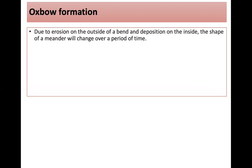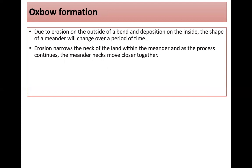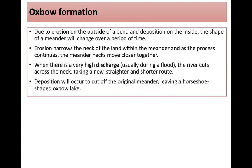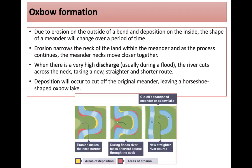Meanders sometimes form oxbow lakes. Due to erosion on the outside of a bend and deposition on the inside, the shape of a meander changes over time. Erosion narrows the neck of the land within the meander, and as the process continues, the meander neck moves closer together. During very high discharge, usually during a flood, the river cuts across the neck, taking a new straighter and shorter route. Deposition occurs to cut off the original meander, leaving a horseshoe-shaped oxbow lake — an abandoned, stagnant body of water.